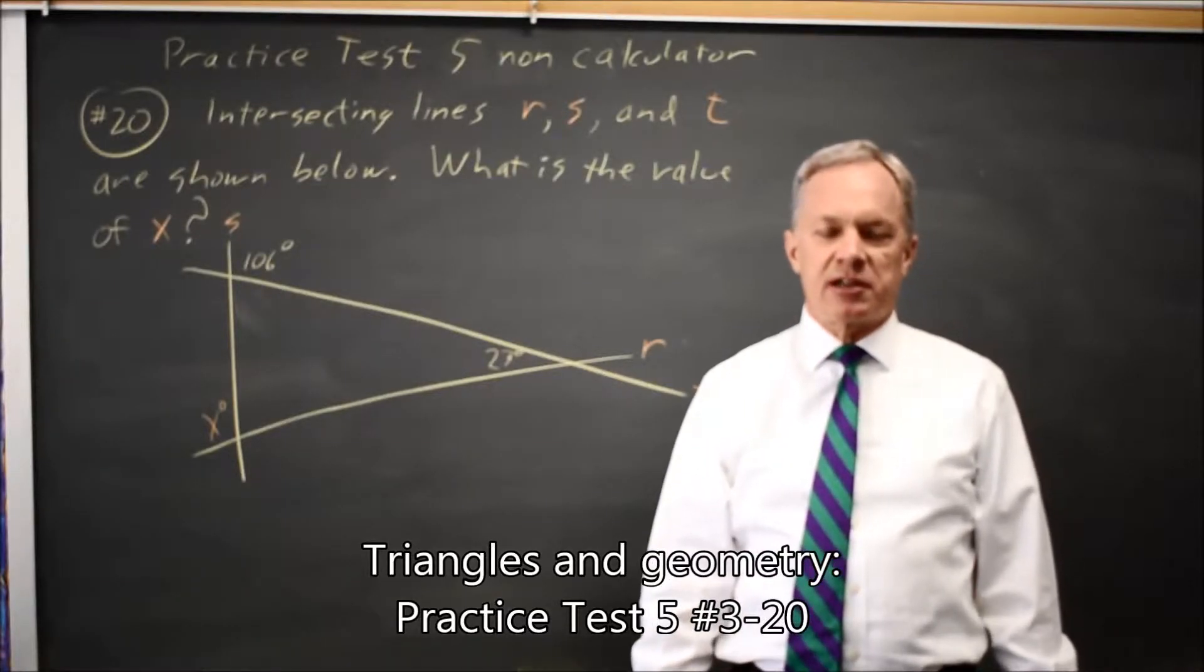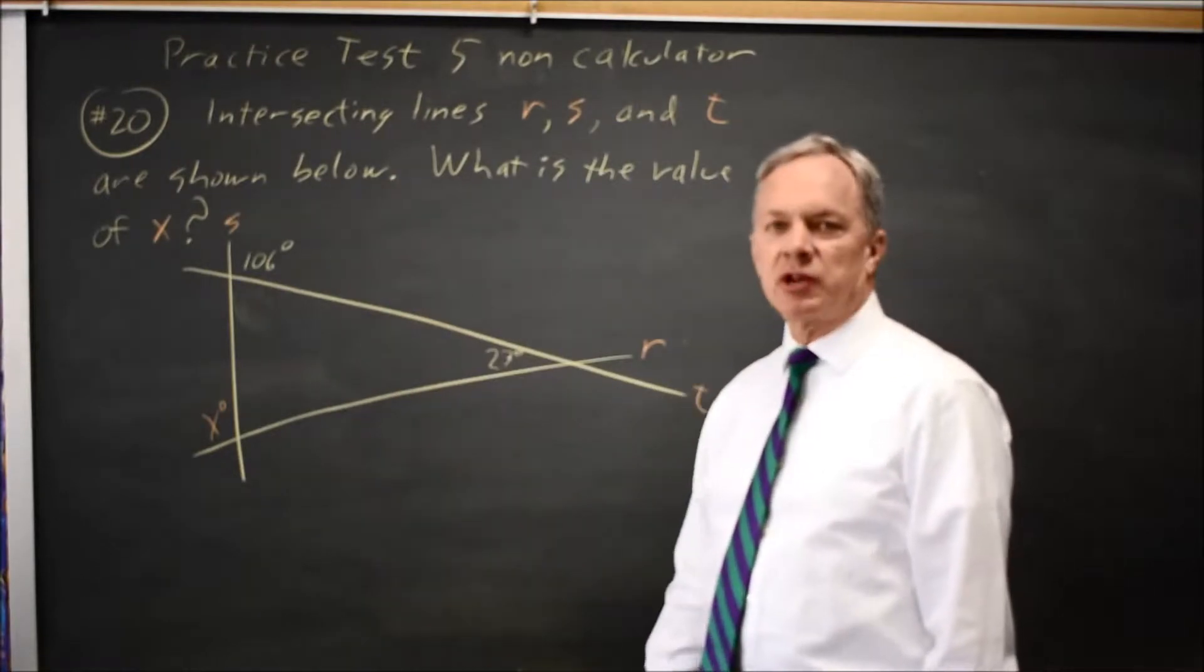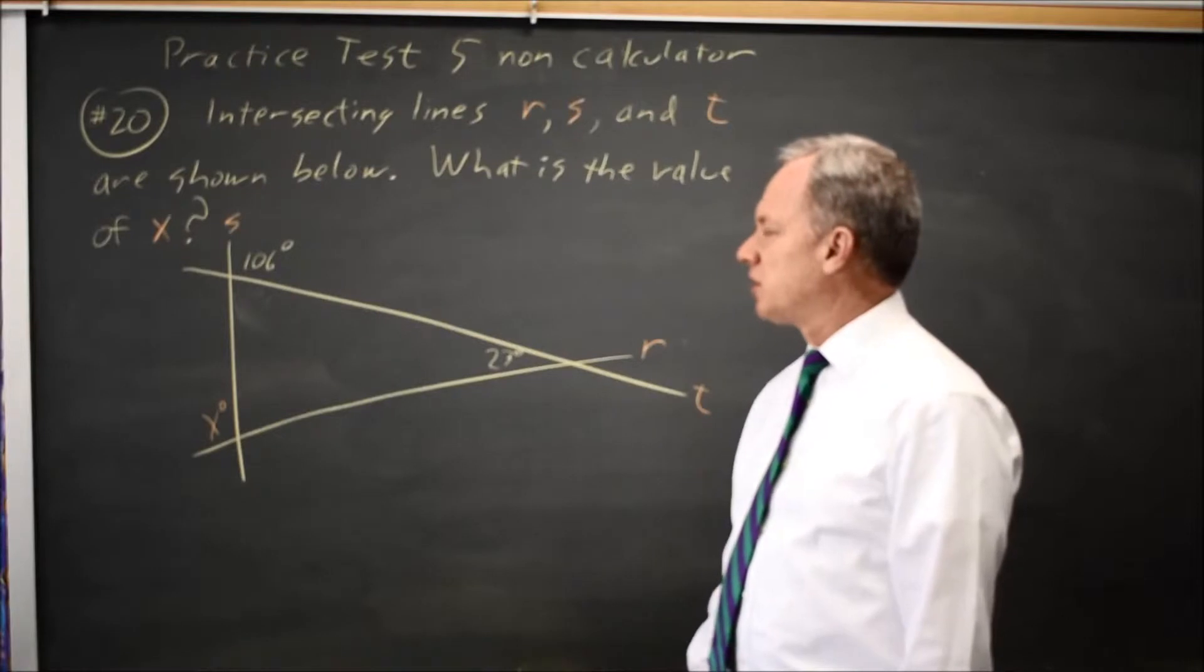This is SAT test 5, non-calculator question number 20. College Board gives us three intersecting lines that form a triangle, and they provide a couple of angles and ask for the measure of a third angle just outside the triangle.